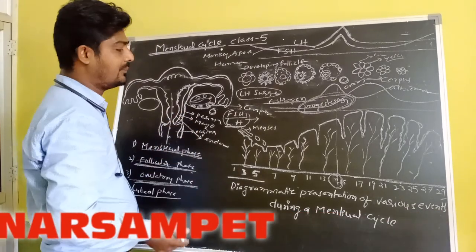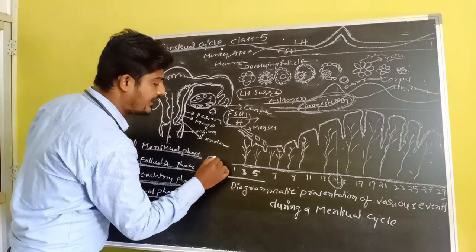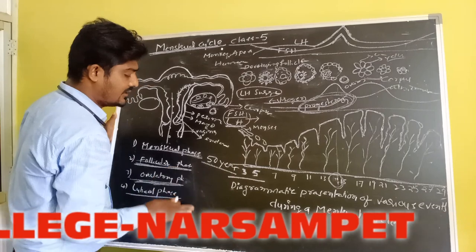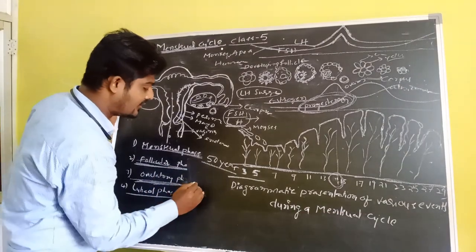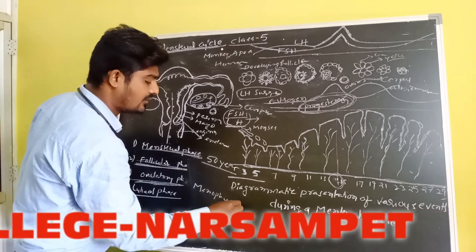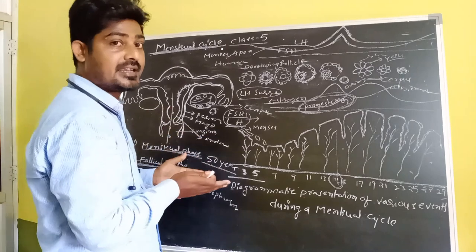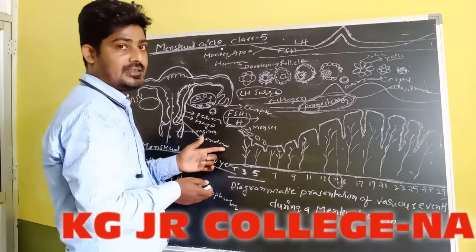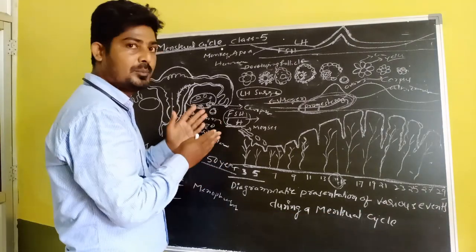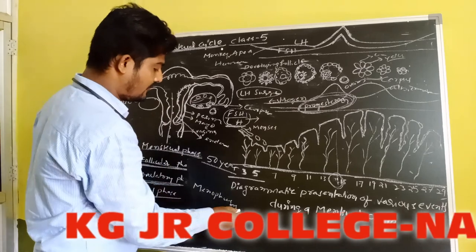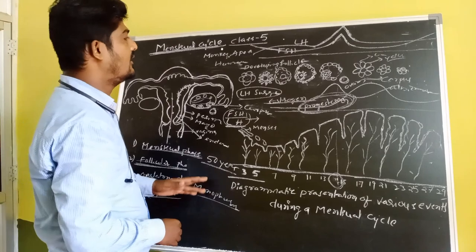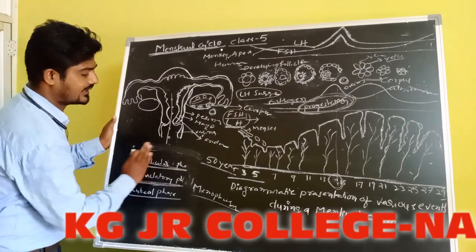The Menstrual Cycle ceases in mature females at about 50 years of age; this cessation is called menopause. The first Menstrual Cycle occurs at the puberty stage and is called menarche. So from menarche to menopause — from puberty to about 50 years — the menstrual cycle occurs in females.